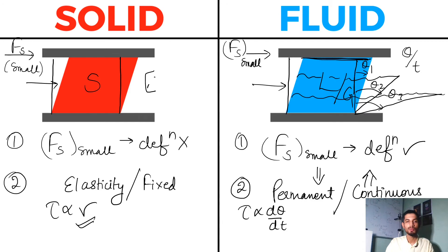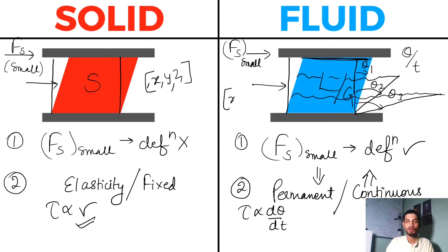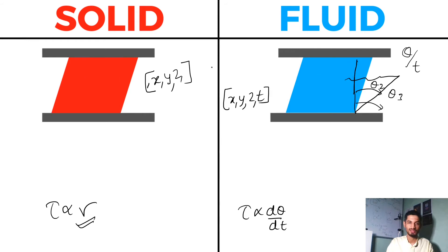This is a very important point which makes fluid mechanics different from strength of materials. In strength of materials we have the xyz coordinate system and there is no time factor, but in fluid mechanics we have xyz and time as well. This is the key difference between the two subjects.